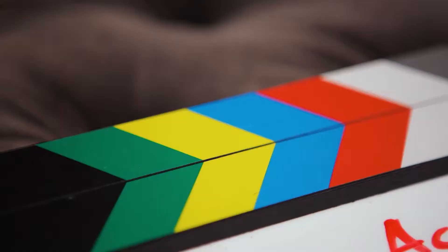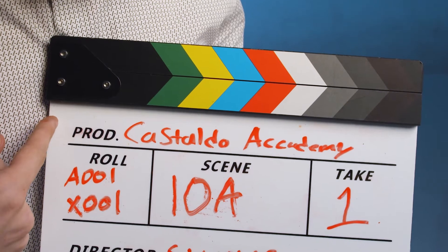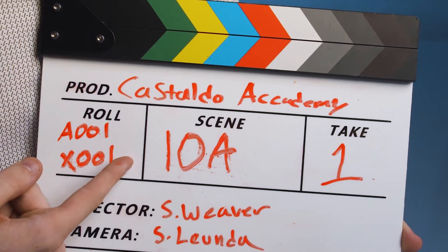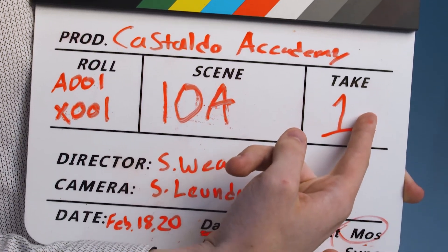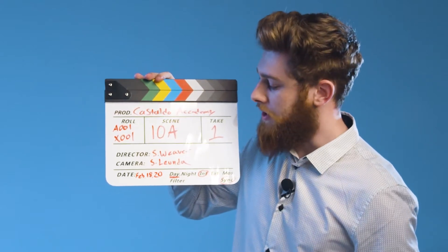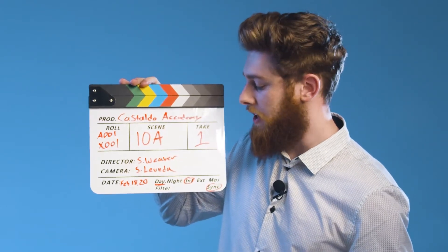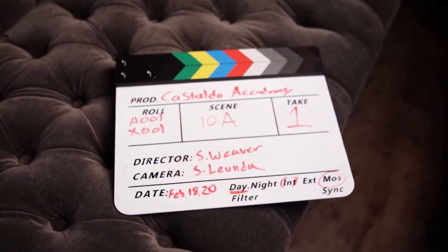At the top here, you're going to have your white balance bars that you use to white balance. Underneath is going to be the production name, then the role, scene, and take number. Then you're going to write down the director's name and the camera, or the DP's name. Then you're going to have the date, if it's day or night, or interior or exterior, and if you're using a filter, or if there's no sound or not.